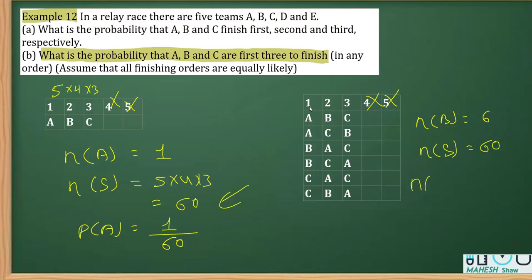The required probability P(B) equals 6/60, which simplifies to 1/10. To summarize: for part (a), the answer is 1/60, and for part (b), it is 1/10.